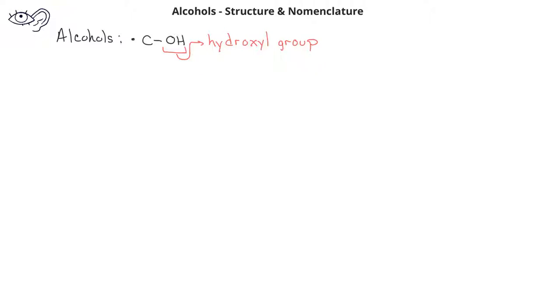Alcohols are an organic functional group that has a hydroxyl group, or OH group, directly bonded to a carbon. When we name alcohols, we change the suffix part of the organic name from E to OL. We can indicate the position of the hydroxyl group in the carbon chain with a number, although we only do this if it's necessary.